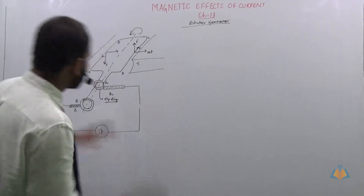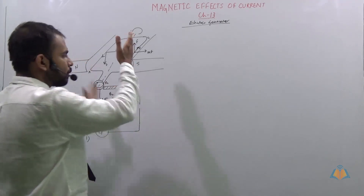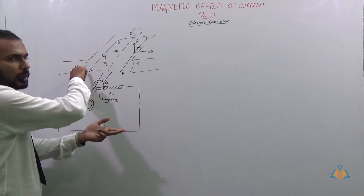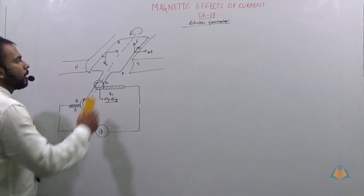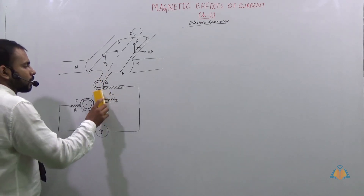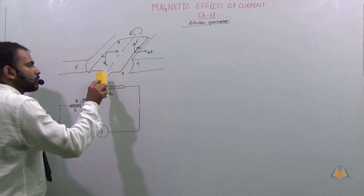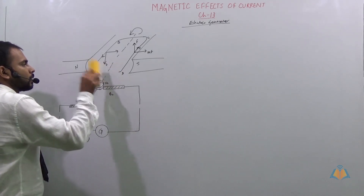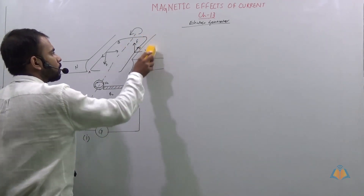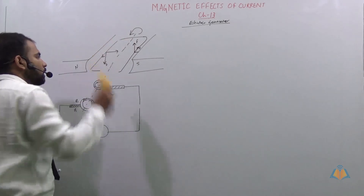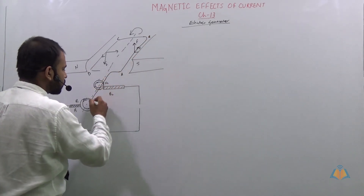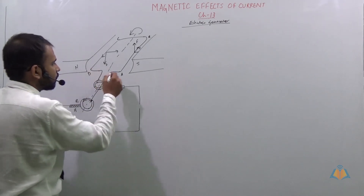In the second situation, CD moves upward and AB moves downward. Due to momentum, they swap positions — the complete coil turns. The positions change: what was A, B, C, D is now rearranged as B, C, D, A. D is now connected to one slip ring and A is connected to the other.